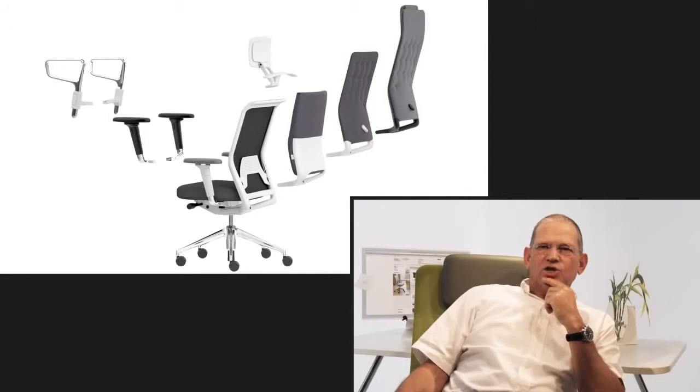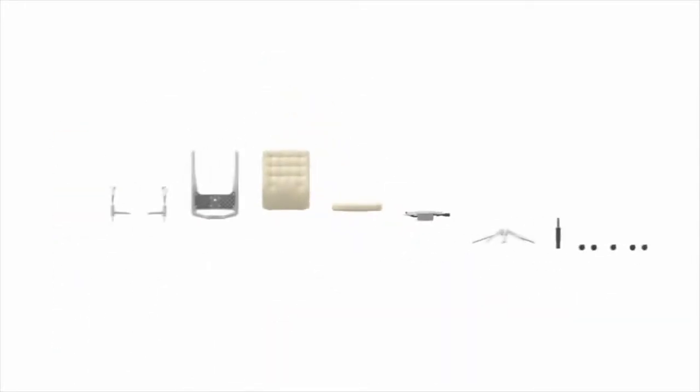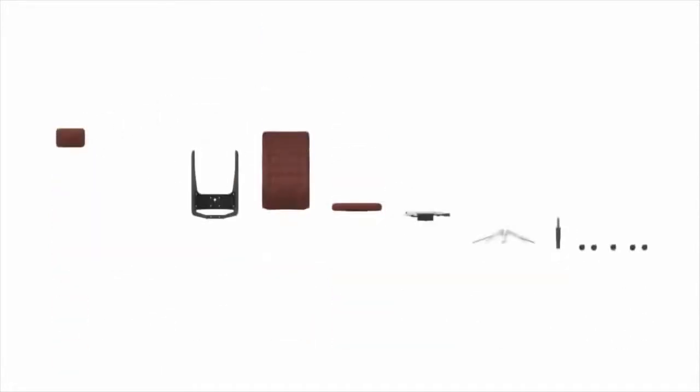ID steht für Identity und Individuality. Das ID-Chair-Konzept ist im Prinzip ein Baukasten, der in Zusammenarbeit mit dem international bekannten Designer Antonio Citterio, dem Vitra-Ingenieur-Team und dem Institut für Biomechanik der ETH in Zürich entstand. Die Idee ist, aus unterschiedlichen Komponenten bis zu 8.000 Varianten individuell auf den jeweiligen Kunden und dessen Geschmack zuschneiden zu können. Die Kunst des Gestalters besteht darin, dass er den gesamten Kreis der unterschiedlichen Möglichkeiten zu einem sehr harmonischen Ganzen zusammenfügt. Und der Kunde hat die Möglichkeit, auch im Nachhinein noch Veränderungen vorzunehmen.